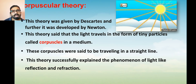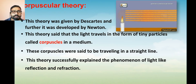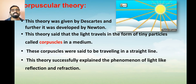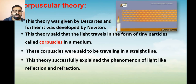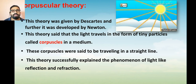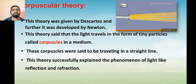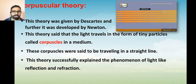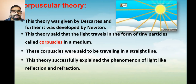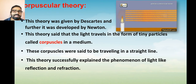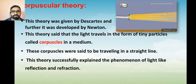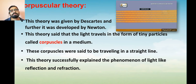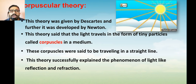Descartes, using his corpuscular theory, was able to explain these phenomena. He said that when light travels in nature, it involves elastic oscillations, and because of these elastic oscillations, light undergoes reflection and refraction. Using this theory, he was able to explain these optical phenomena.